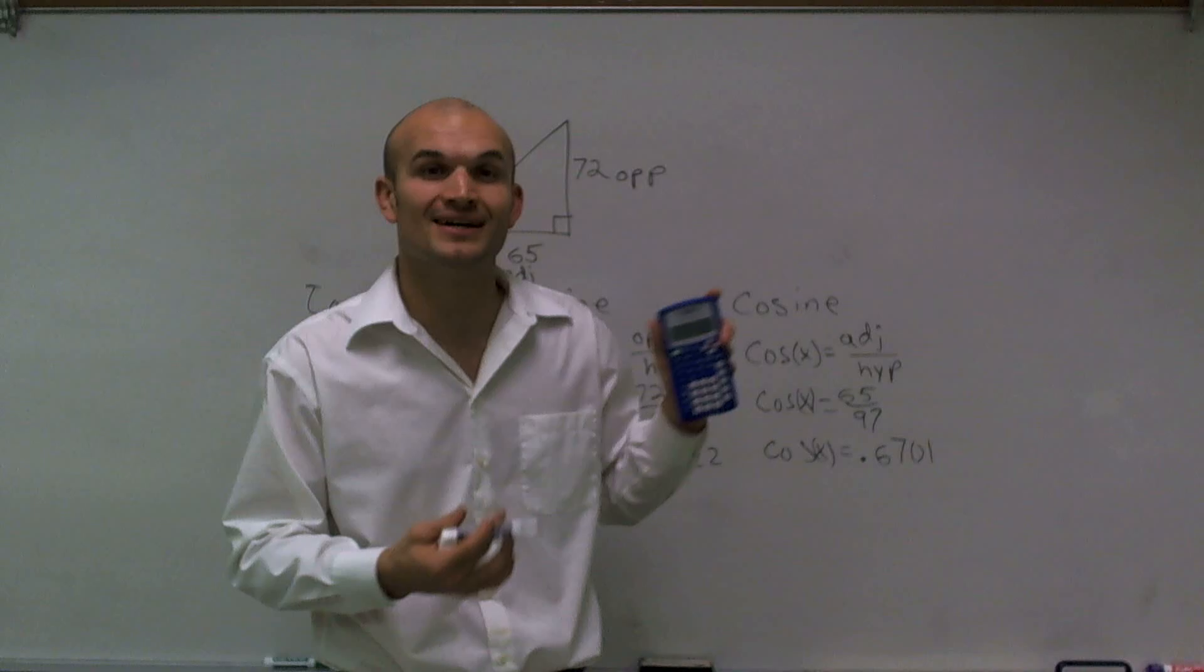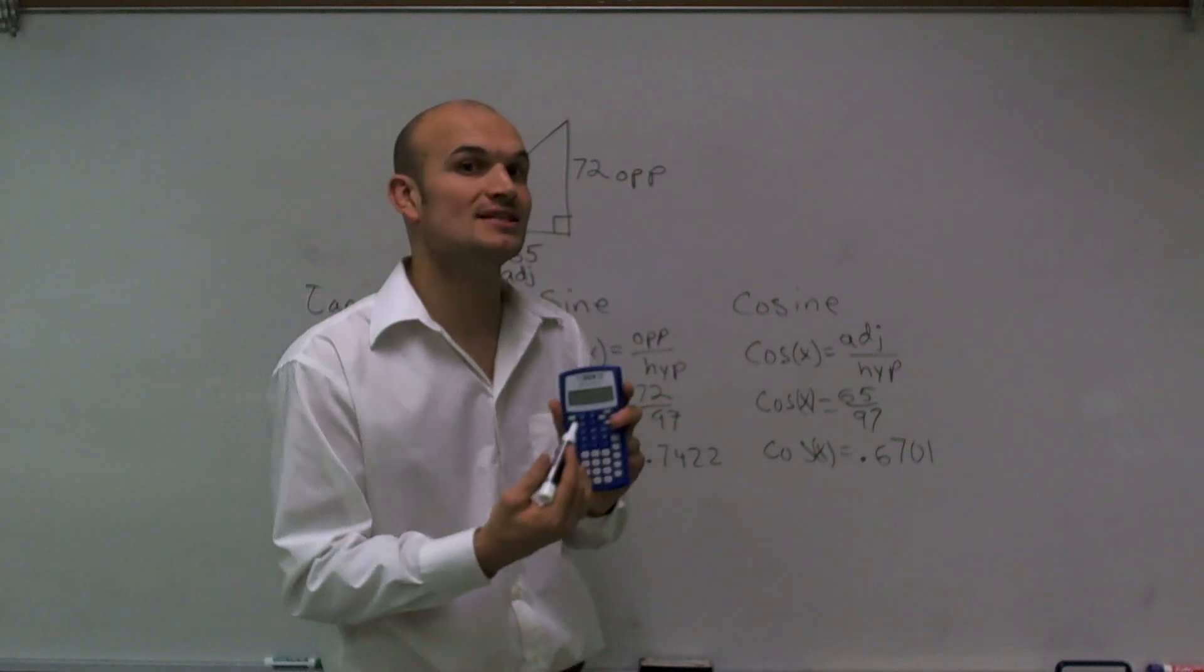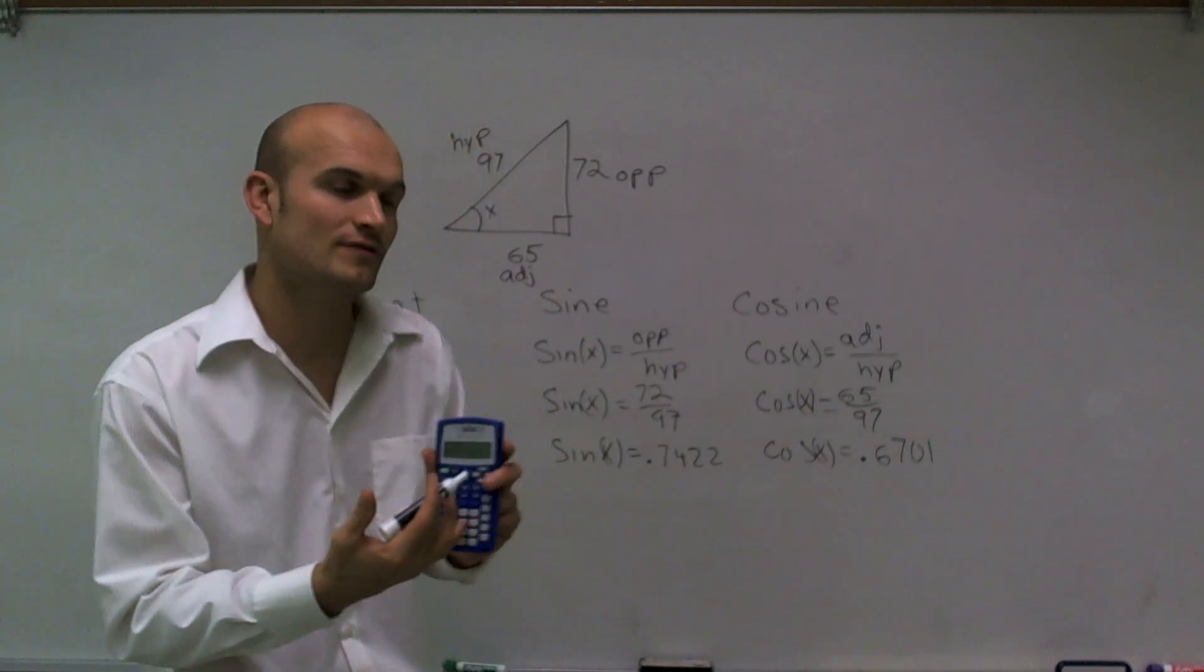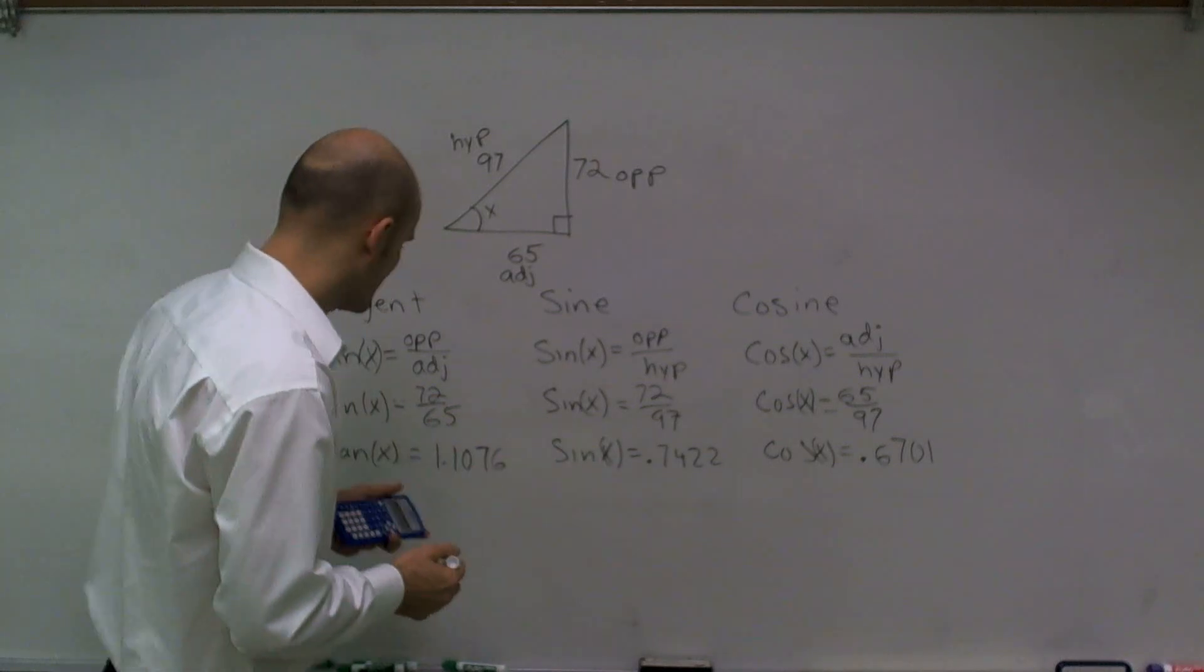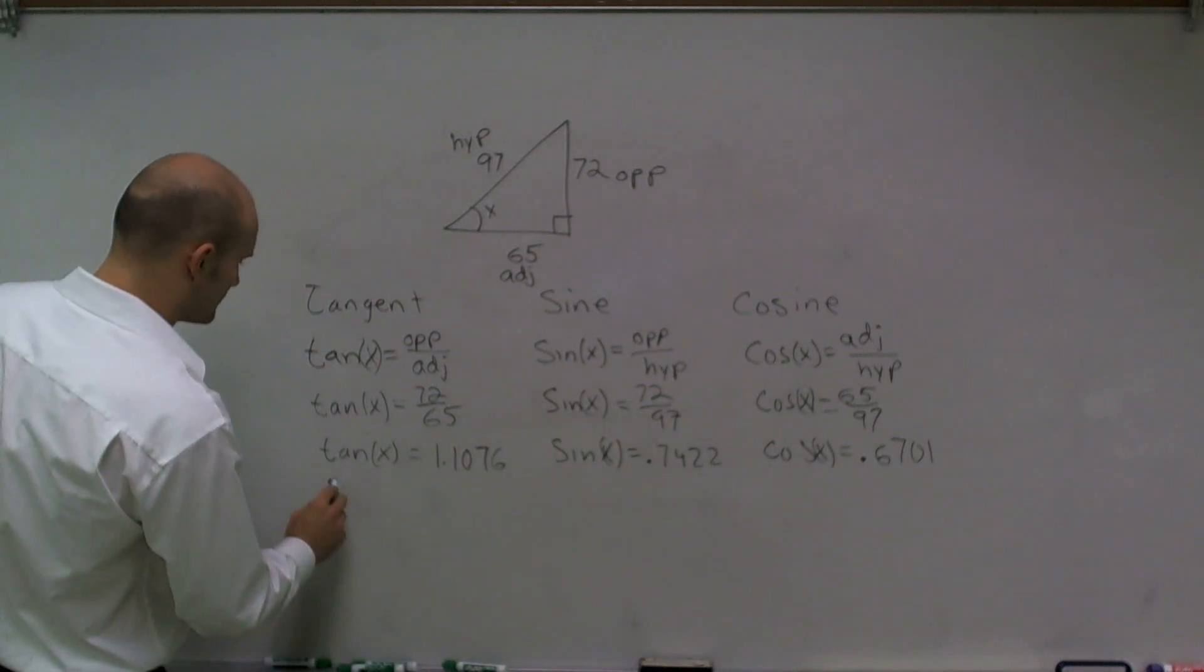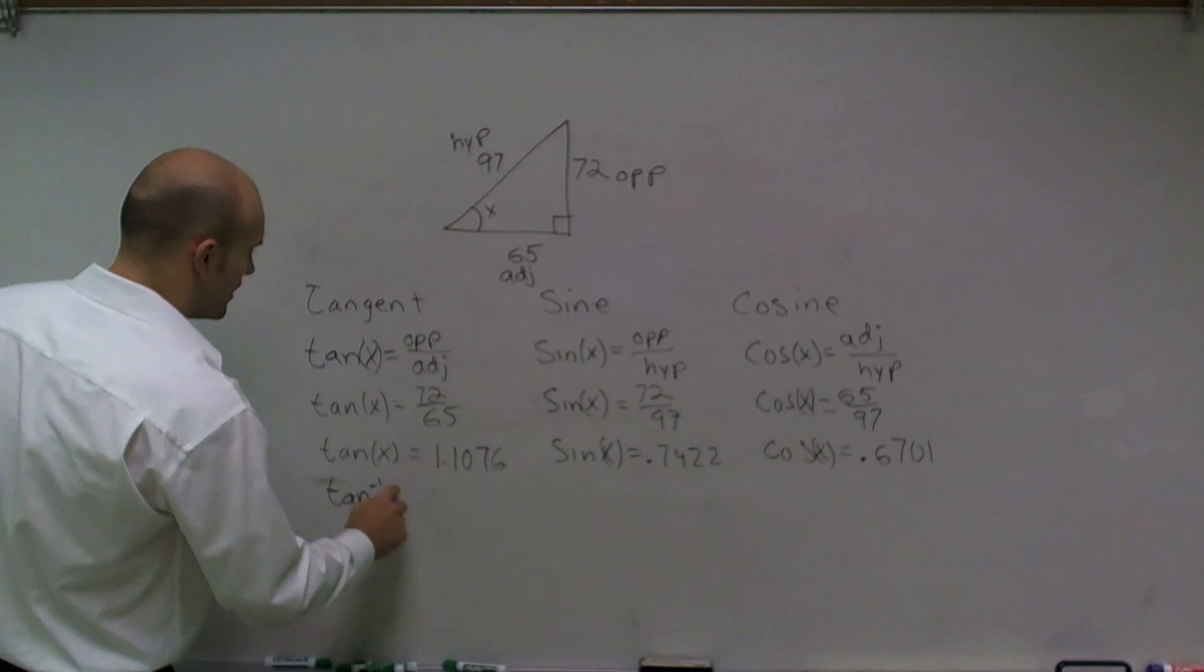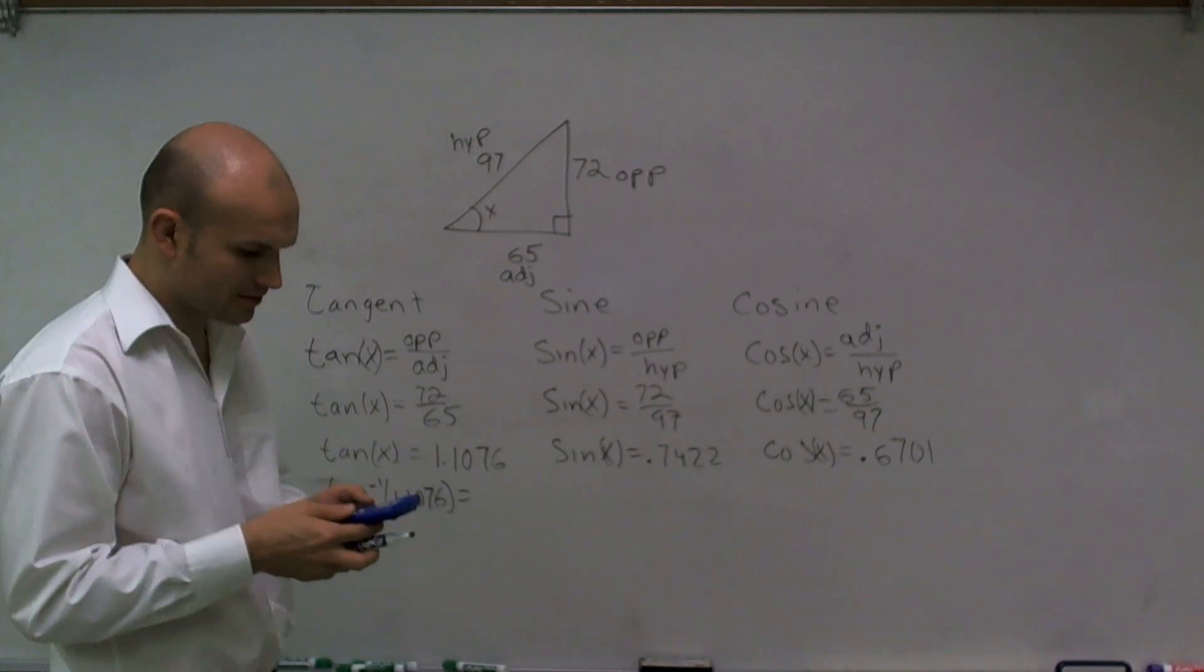Thankfully for our calculator, it's what we call the inverse function. The inverse tan undoes tan, the inverse cosine is the inverse function of cosine, and the inverse sine is the inverse function for sine. So if I take the inverse tan of what my value is, I'm going to get my angle.